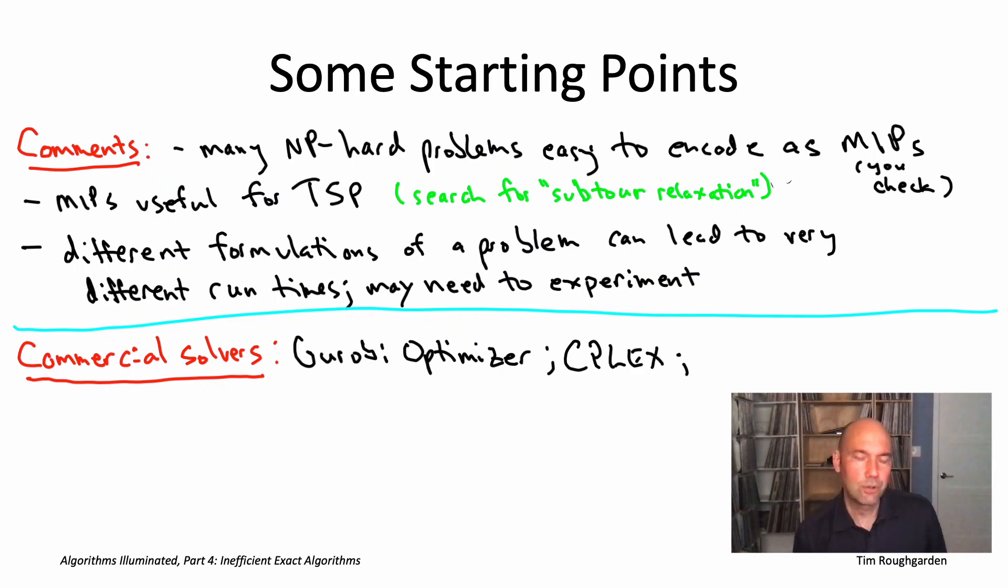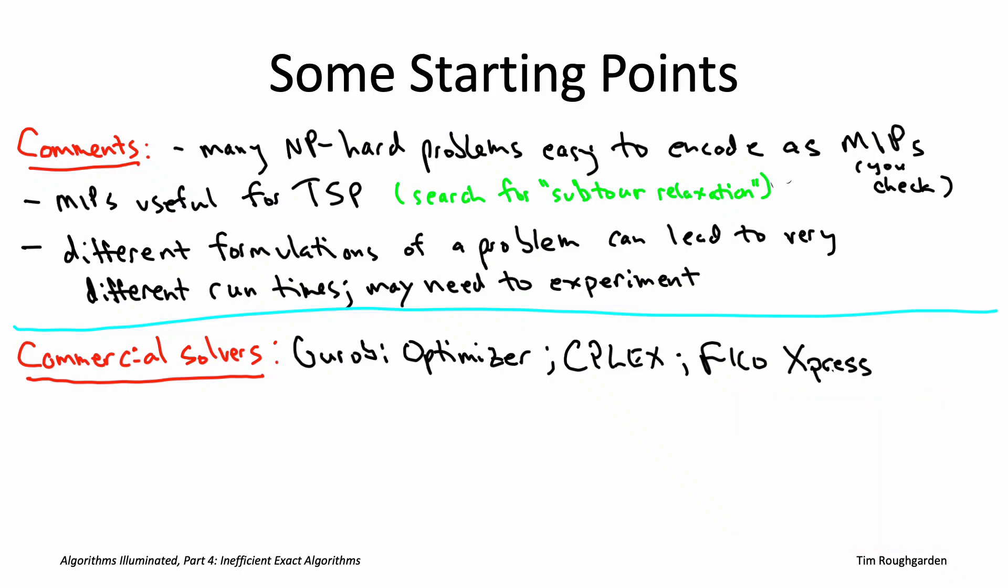If you wanted to choose a runner-up, you'd probably choose either CPLEX, which is in some ways a precursor to Gurobi optimizer, or FICO Xpress. The good news is that if you're associated with a university, if you're a student or staff at a university, you can obtain free academic licenses for any of these solvers.